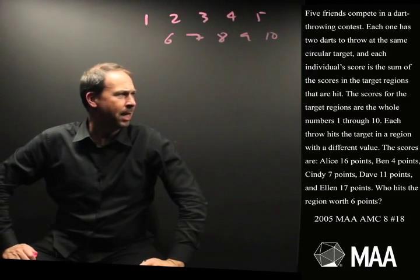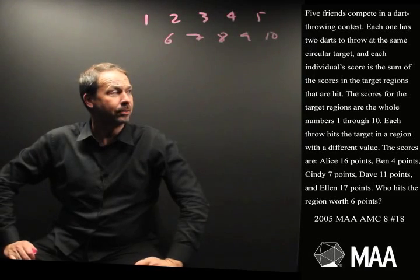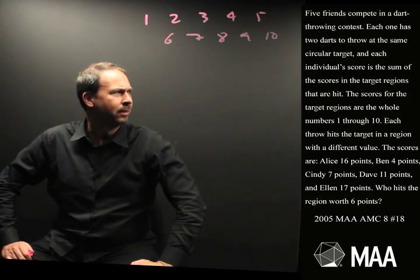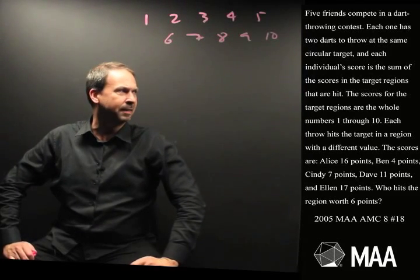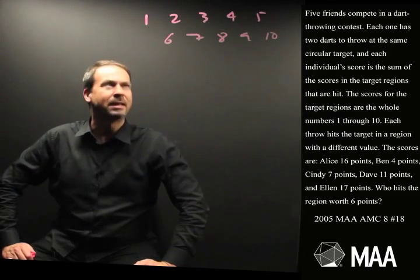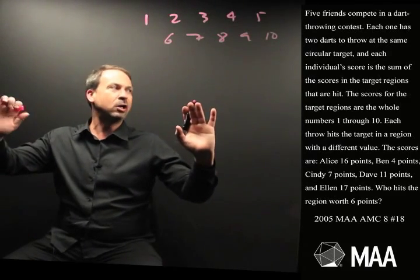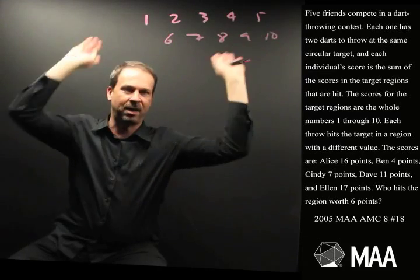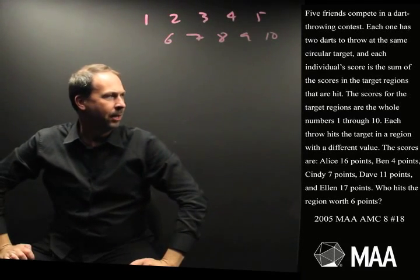Each throw hits the target in a region with a different value. Hang on a second. There's five friends, each throwing two darts at this target. They're telling me that the throws each hit a different number. So each friend is getting two different numbers like 1 and 9, and 4 and 6, and 2 and 5. Something like that.